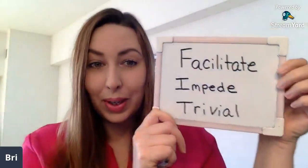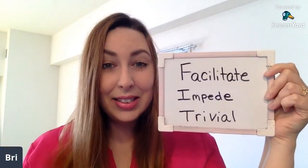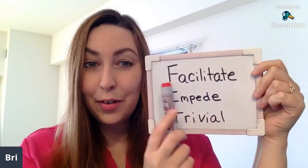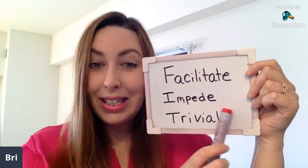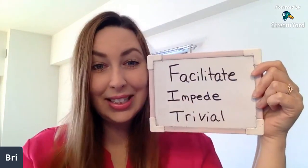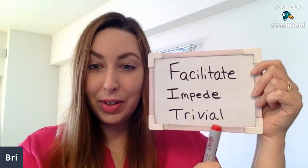We're going to be learning three advanced English vocabulary words. We had a quiz on YouTube. For those of you who haven't watched the previous advanced vocabulary lessons, these vocabulary words are on the advanced vocabulary quiz on YouTube. So if you search for that, you'll be able to take the quiz. So after this lesson, try and take the quiz and see how well you do. Today's words: facilitate, impede, and trivial.